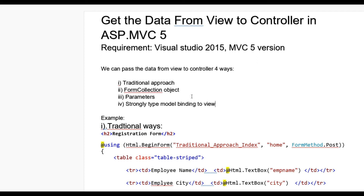Hello guys, today we learn how to get data from view to controller in ASP.NET MVC5. We require Visual Studio 2015 and MVC5. We can pass data from view to controller in four ways: the first approach is the traditional approach, second is form collection object, third is parameter, and fourth is strongly typed model binding to view.